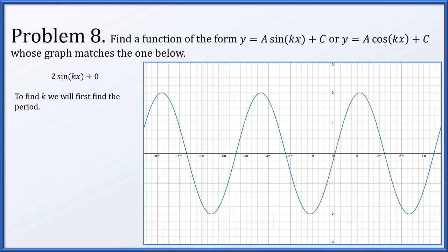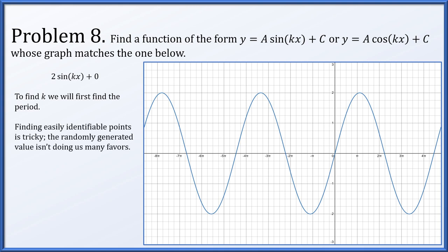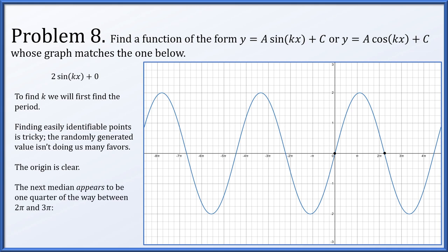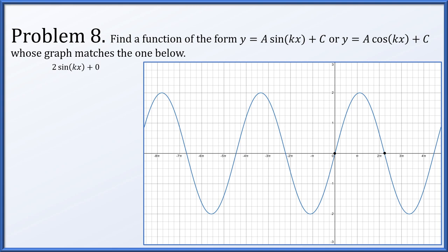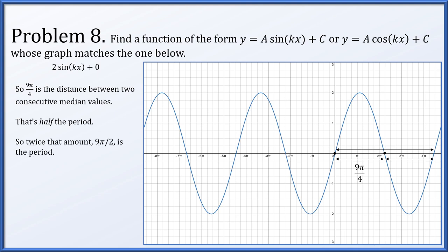K is related to the period, so let's try to find the period. Finding easily identifiable points on this graph is tricky since the numbers aren't convenient. The origin is straightforward, but the next obvious point is a median crossing that is a quarter of the way between 2π and 3π. A quarter of pi added to 2π is 9π/4. So we're looking for a function 2·sin(kx), and 9π/4 is the distance between two consecutive medians — that's half the period. So the period is 9π/2. Thus 2π/k = 9π/2, and solving for k gives 4/9. So y = 2·sin(4/9 · x).